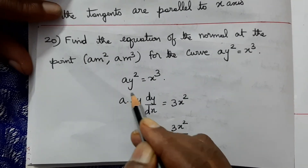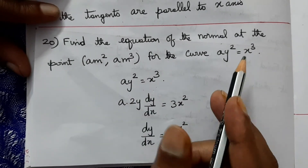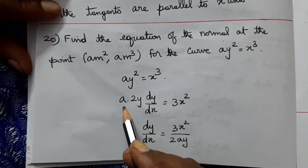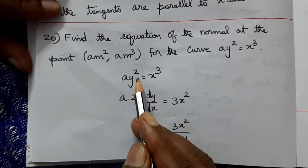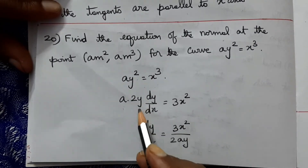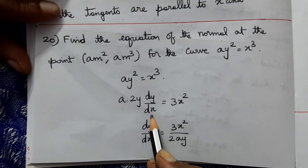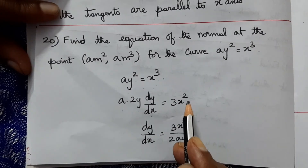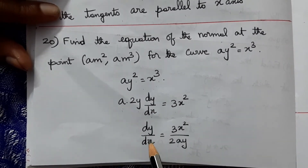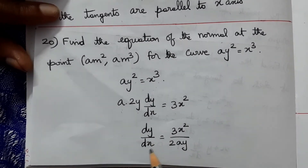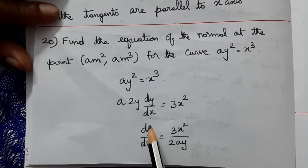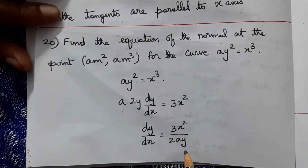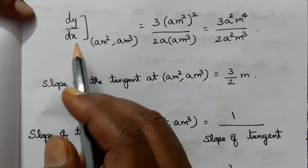Differentiating ay² = x³ implicitly: a × 2y × (dy/dx) = 3x². Therefore dy/dx = 3x² / (2ay).